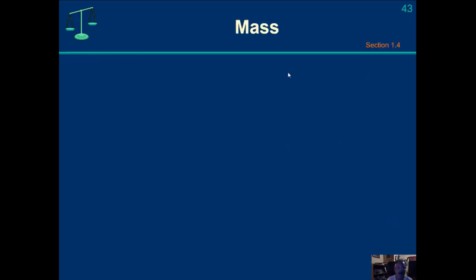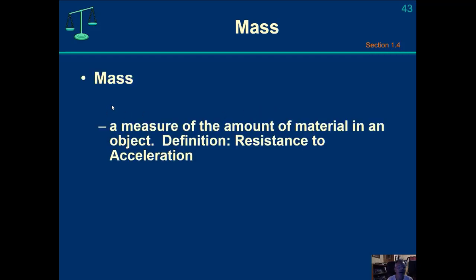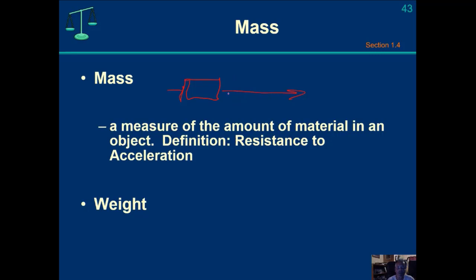Let's talk about mass. Mass is simply some measure of the amount of material in an object. The official definition of mass is the resistance to acceleration. If I have some kind of object with a certain amount of mass and I apply a force to it, it's going to resist acceleration in any particular direction. If the object is already traveling and I change its direction, that is also an acceleration. So mass is simply a resistance to acceleration.